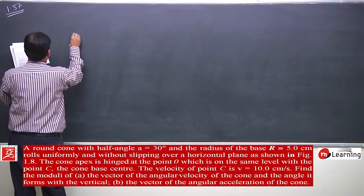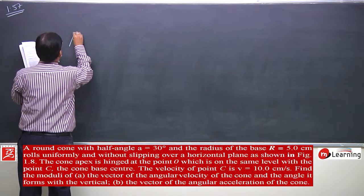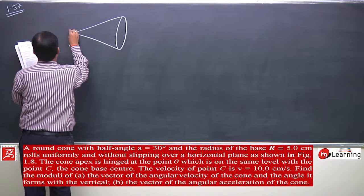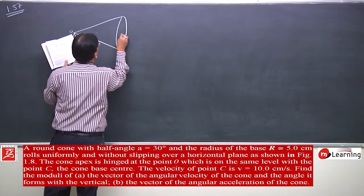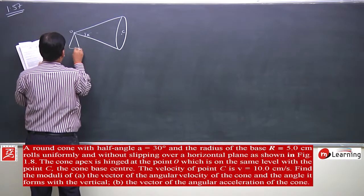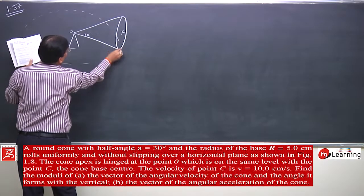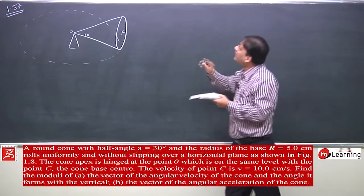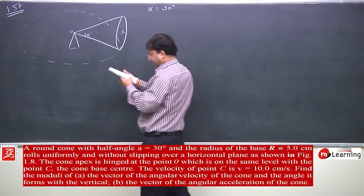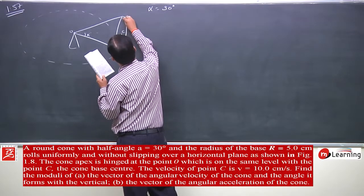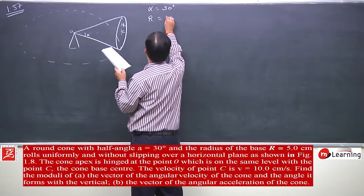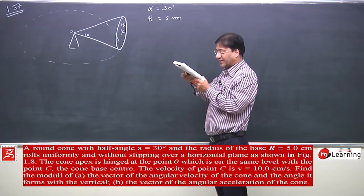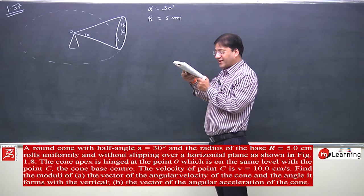This is point O, the apex. This is point O, and this is angle alpha. Here we have point C, and the cone is drawn in this manner. The solid cone with half angle alpha equal to 30 degrees and radius of base R equal to 5 centimeters rolls uniformly without slipping over a horizontal plane as shown in the figure. The cone apex is hinged at point O, which is on the same level as point C.